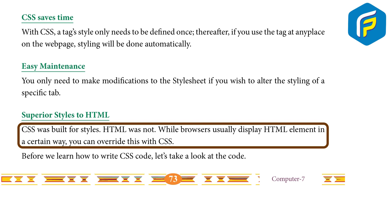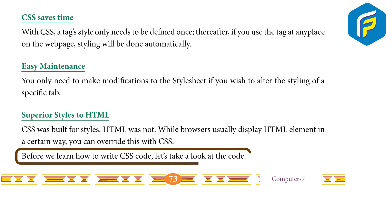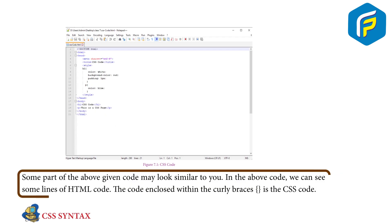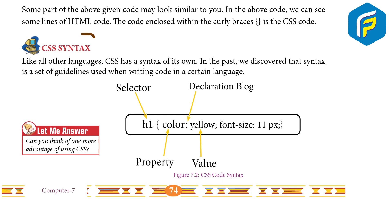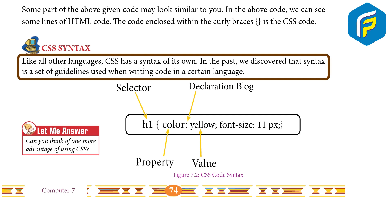While browsers usually display HTML elements in a certain way, you can override this with CSS. Before we learn how to write CSS code, let's take a look at the code. Some parts of the above given code may look similar to you. In the above code we can see some lines of HTML code, enclosed within curly braces — that is the CSS code.